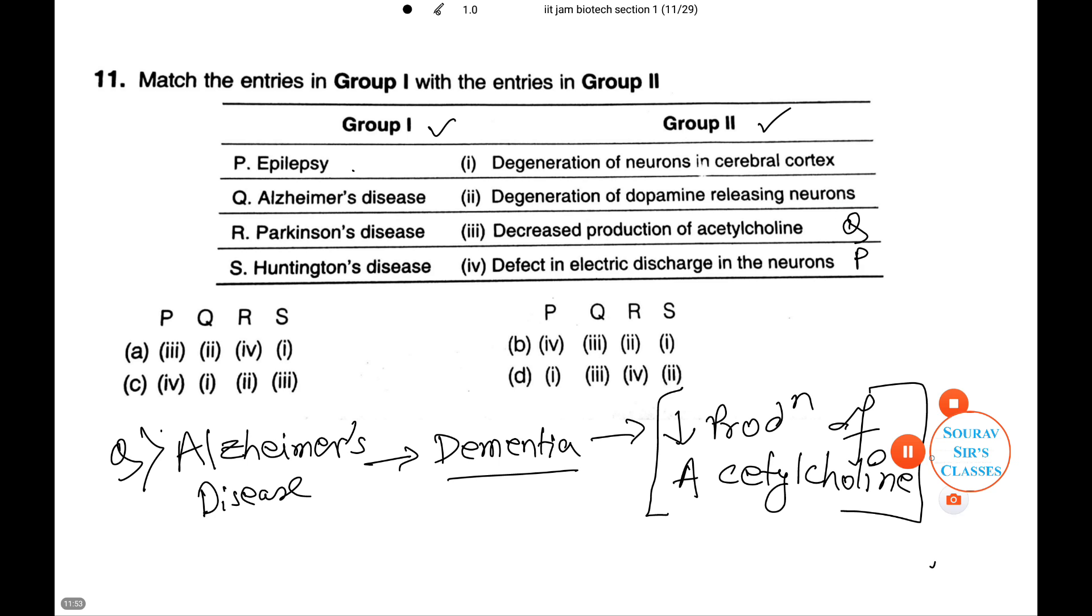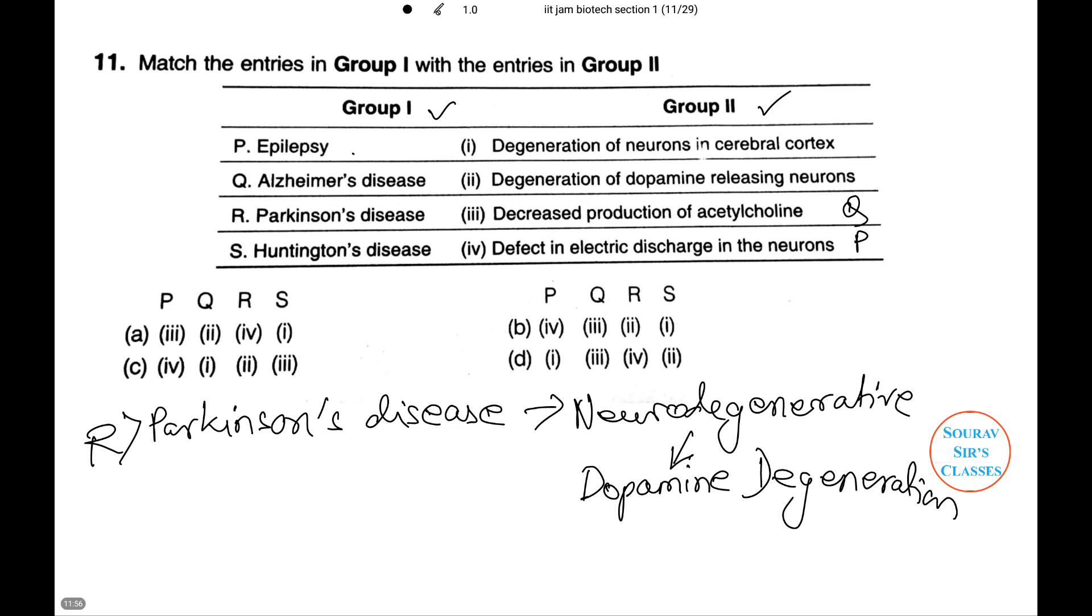Next, we'll do Parkinson's disease. Parkinson's disease is a neurodegenerative disease. It's caused by the degeneration of dopamine releasing neurons in the substantia nigra, a region deep in the central area of brain. Thus, R is the answer of number 2.